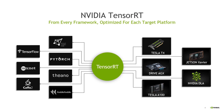TensorRT includes an inference optimizer and runtime which can deliver low latency and high throughput inference for a wide range of platforms — for example, Jetson embedded devices, the NVIDIA Drive autonomous driving platform, and also data center GPUs such as the new Tesla A100. TensorRT is also compatible with all major deep learning frameworks, so you can use your favorite framework to train the model and use TensorRT for inference.